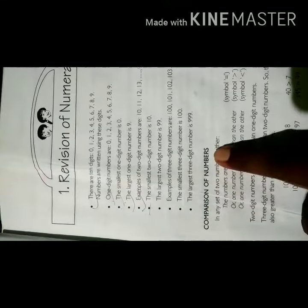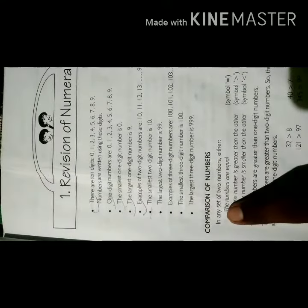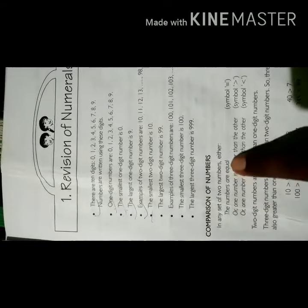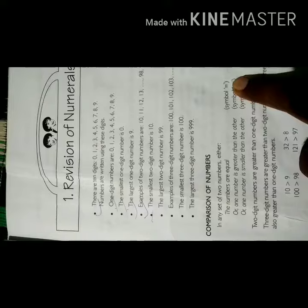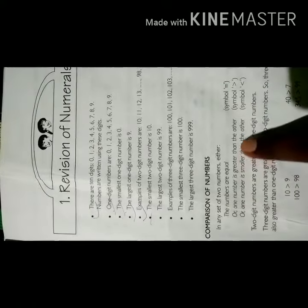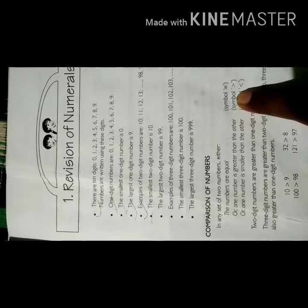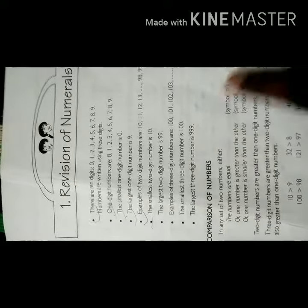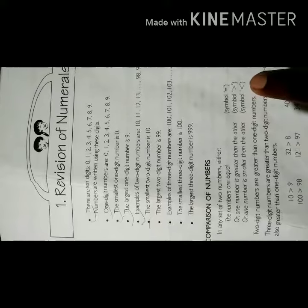Comparison of numbers. In any set of two numbers, either the numbers are equal — the symbol for this is the equal sign — or one number is greater than the other. If a two digit number is compared, the greater number uses the greater than symbol, and the smaller number uses the less than symbol.